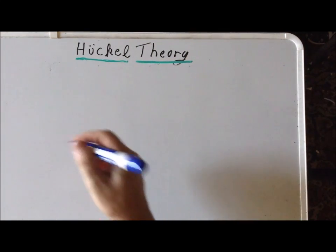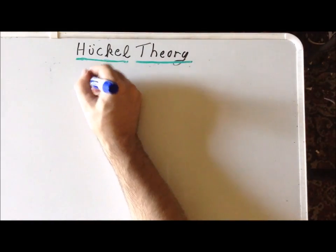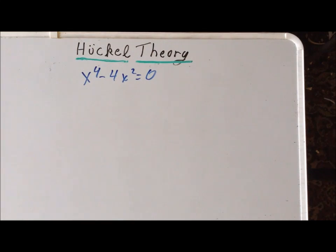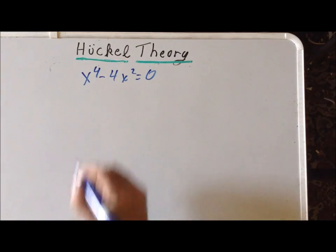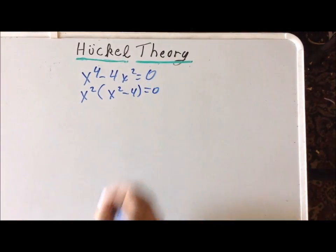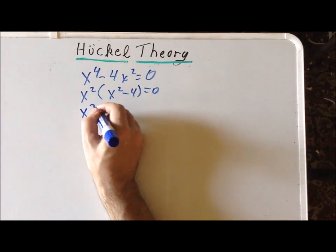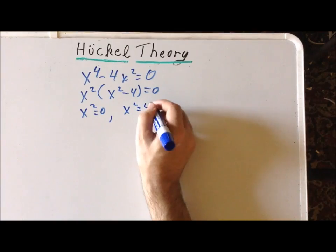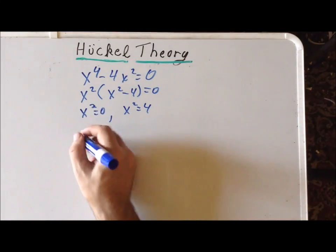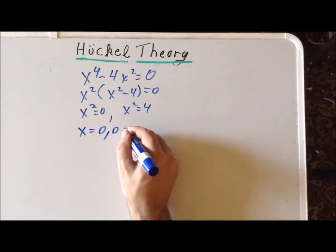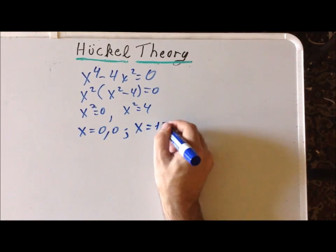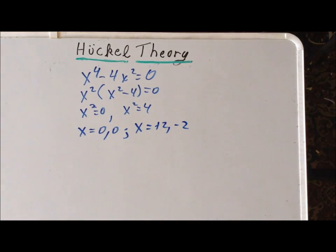We simplified the 4 by 4 determinant equation down to x⁴ − 4x² = 0. This factors easily: we factor out x², giving x²(x²−4) = 0. We immediately recognize x² = 0 and x² = 4. This breaks the quartic into two quadratics: x = 0 (doubly degenerate) and x = +2 or x = −2. So we have four roots, one of which is doubly degenerate.